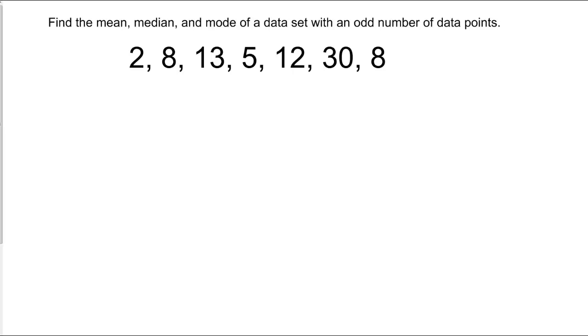So let's go ahead and calculate a couple of these based on the number of numbers in the set. Here's a set of data with some numbers, and we want to find the mean, median, and mode. The first thing we're going to do on pretty much all these problems is take and write this in numerical order. So we've got 2, 5, two 8s, 12, 13, and 30. I've rewritten things in numerical order.